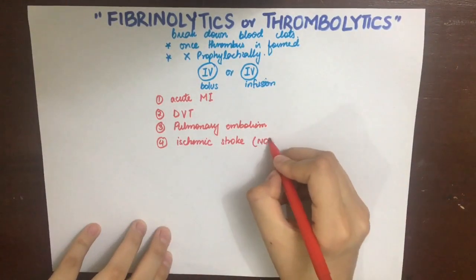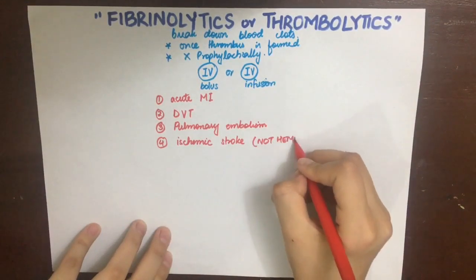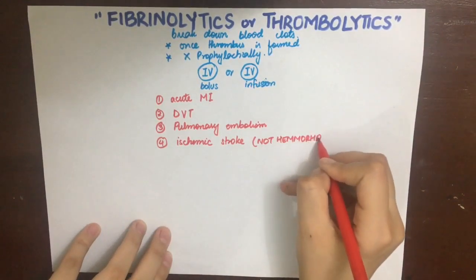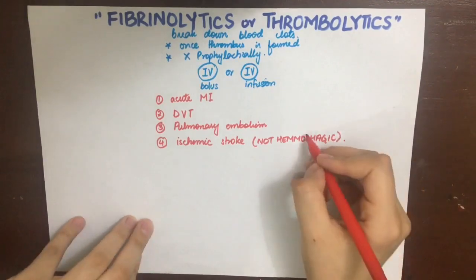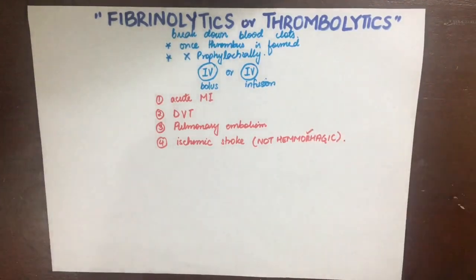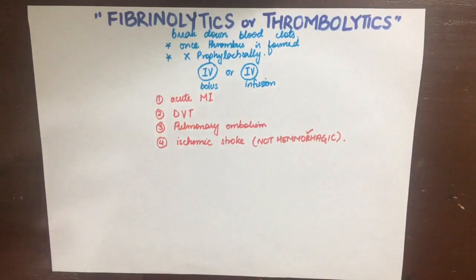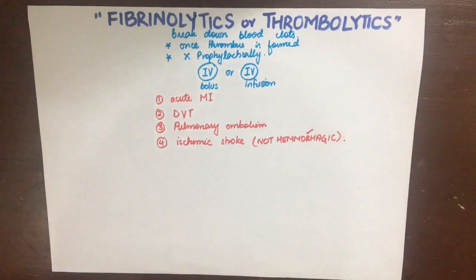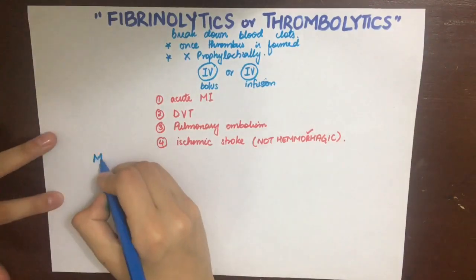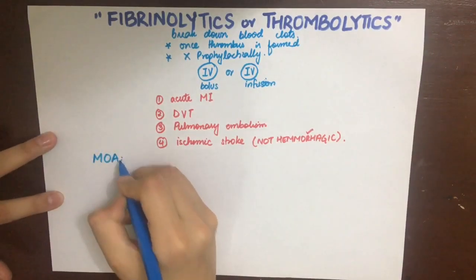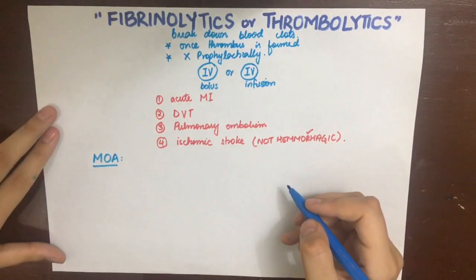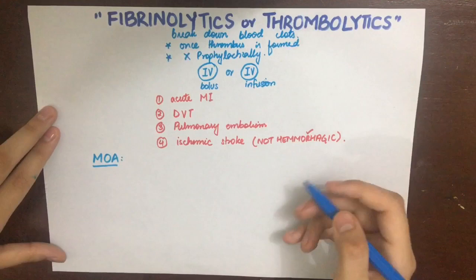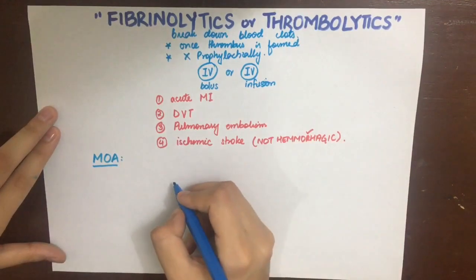Remember that stroke can also be of the hemorrhagic type, in which if you give fibrinolytics or thrombolytics it can worsen the situation. So first you need to do an MRI to confirm that the stroke is due to thrombus formation.